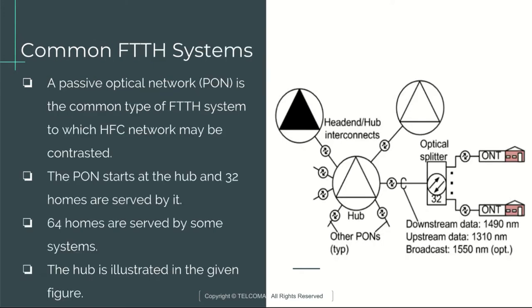Next is Common FTTH Systems. A passive optical network is the common type of FTTH system to which HFC network may be contrasted. The PON starts at the hub and 32 homes are served by it. 64 homes are served by some systems. The hub is illustrated in the given figure.